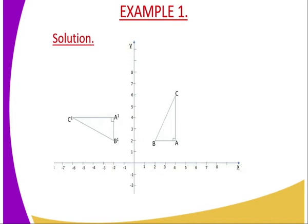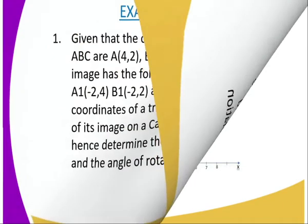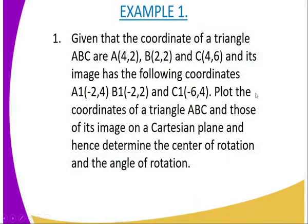So the first step is you plot the coordinates of the object and also the coordinates of the image on a Cartesian plane. You are required to plot the coordinates of triangle ABC and those of its image on the Cartesian plane, and hence determine the center of rotation and the angle of rotation.